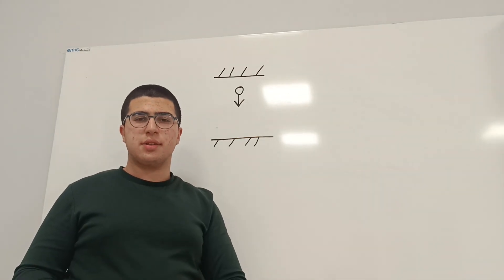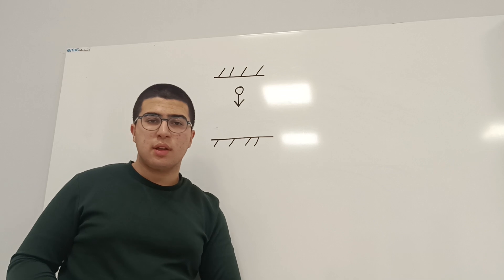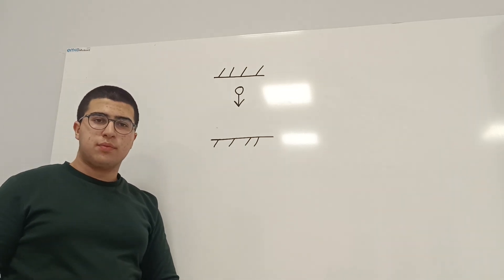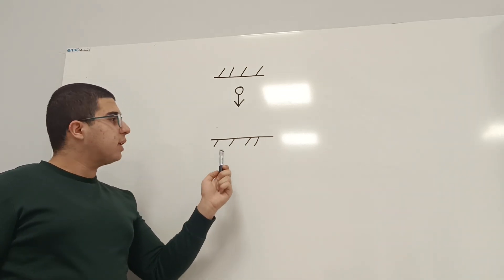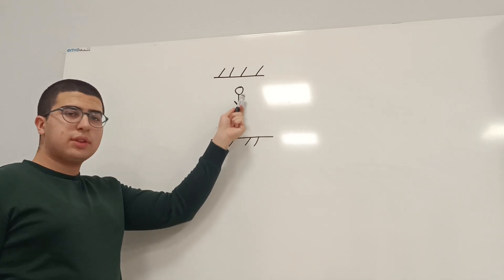First of all, to understand time dilation, we need to make a thought experiment with a hypothetical clock. This clock is a photon clock, and there is a photon inside of it and there are two mirrors.